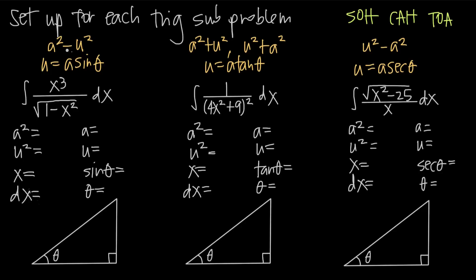Once you identify which form you have, you'll know which substitution to use. The information you find from that is always going to be the same. I'm going to find a squared and u squared, then a and u, then solve for x and find dx. Then I'll solve for the trigonometric function associated with the substitution — sine, tangent, or secant of theta — and use that to solve for theta. Finally, I'll plug key pieces into a reference triangle, and the setup is done. Let's go through each example.